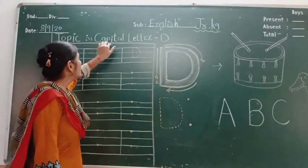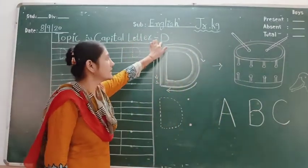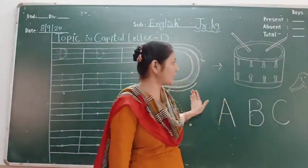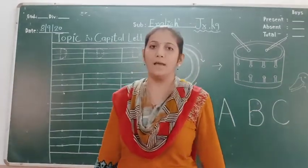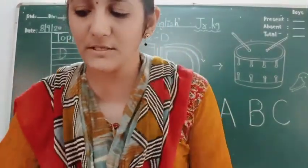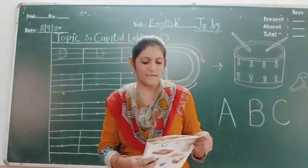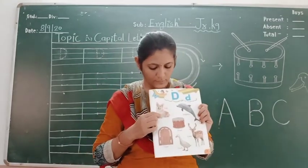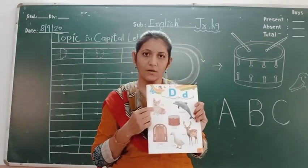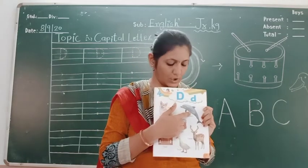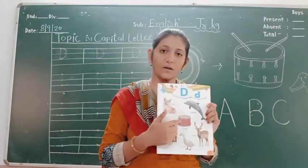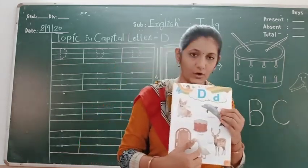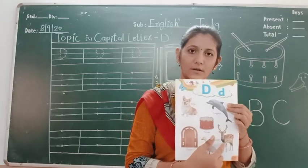So today I will teach capital letter D. D for drum, D for duck. I will show you some pictures related to capital letter D. Can you see here: first, D for dog, D for dolphin, D for drum, D for door, D for dog, and D for deer.